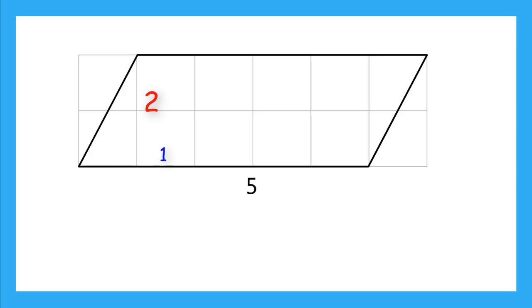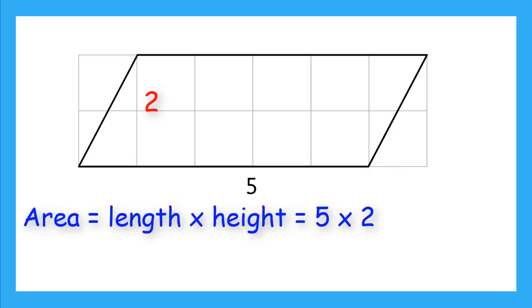But I only count 1, 2, 3, 4 whole squares. But notice that these partial squares over here and these ones over here make up a full square. So in fact, I do have 5 square lengths. So now we can multiply length times height. 5 times 2 is 10.